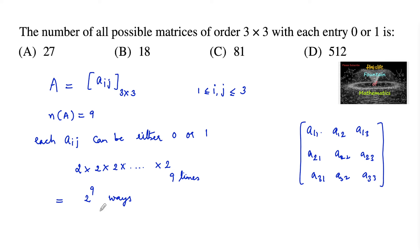2 to power 9 possibilities are 512 values. So 512 possibilities are there with either the element 0 or 1. We can go with option D.